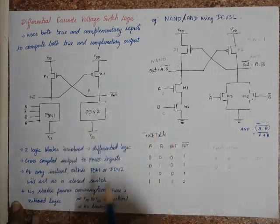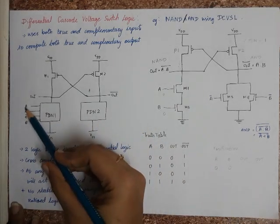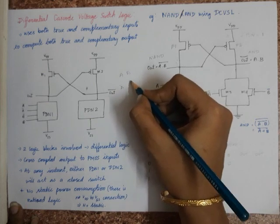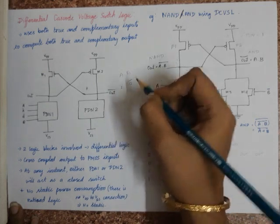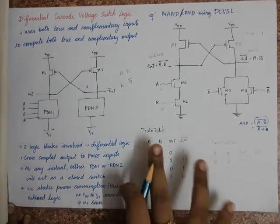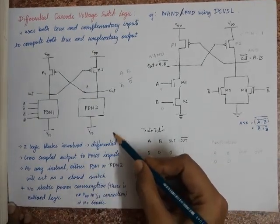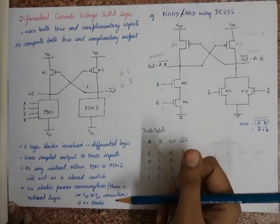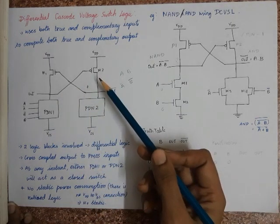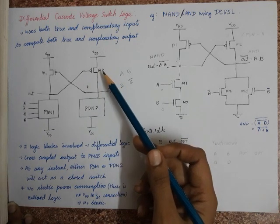Here what we see is that the inputs, which are the true versions and the complement versions, are given as input and we obtain both the true and complementary output. This gets its name because of using differential logic, and here the pull-down network is cross-coupled with the PMOS network.